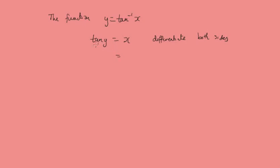the derivative of the tan function is sec squared y and then we have dy by dx equals 1. So dy by dx is 1 over sec squared y and we can use the identity sec squared y is 1